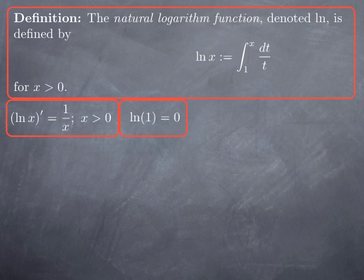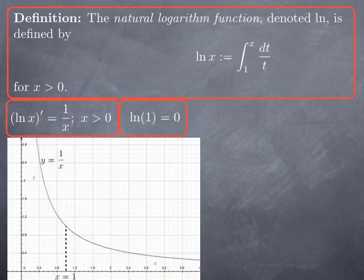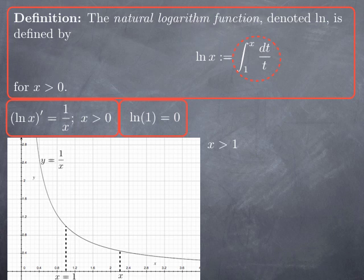Now let's look at what that means graphically. This is the graph of 1 over t, and you see that the value x equals 1 plays a particular role. If I pick an x greater than 1 and look at ln(x), which by definition is the integral from 1 to x of 1 over t, it is the area under the graph of 1 over t between t equals 1 and t equals x. So ln(x) is given by this area — and in particular, when x is greater than 1, ln(x) can be interpreted as an area and is therefore positive. This is not surprising because ln is 0 at 1 and increasing, so for x greater than 1 we expect a positive value.